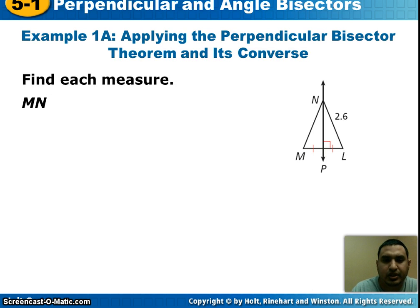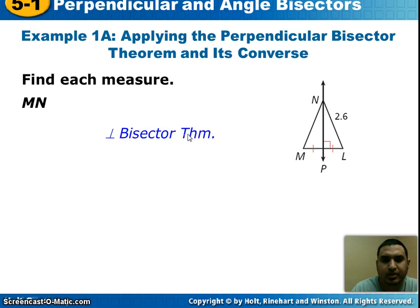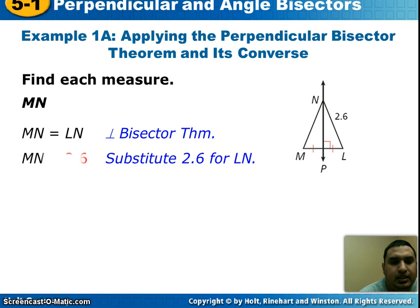Here's our first example. Looking at this, you notice that NP is perpendicular to LM, and you also know that the distance from P to M is equal to the distance from P to L. So that means NP is the perpendicular bisector, so the distance from M to N is equal to the distance from L to N. And since LN is 2.6, that means MN is 2.6.